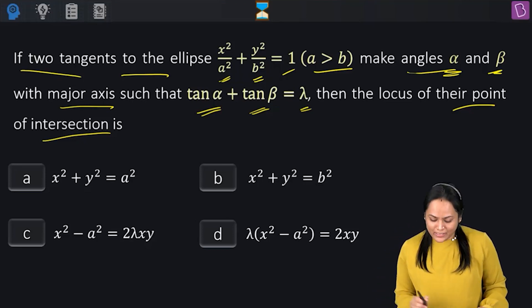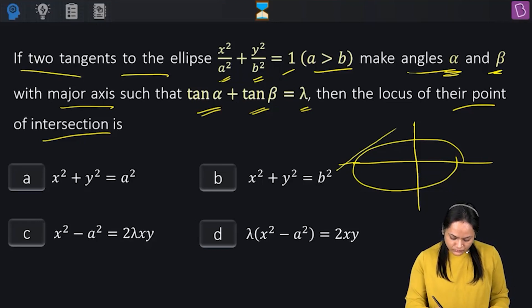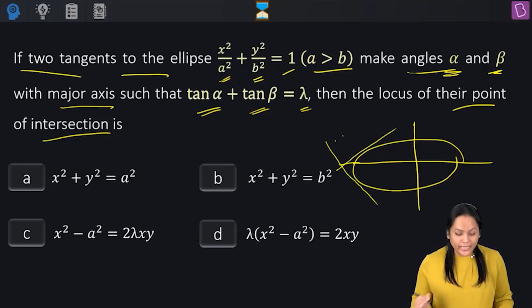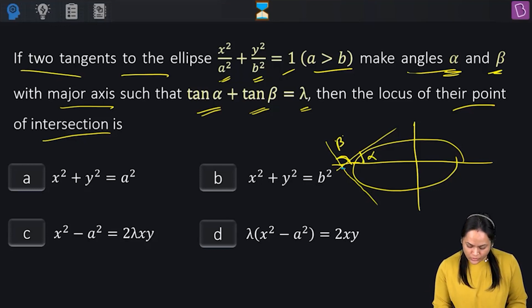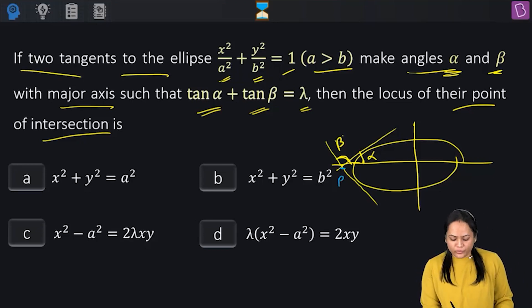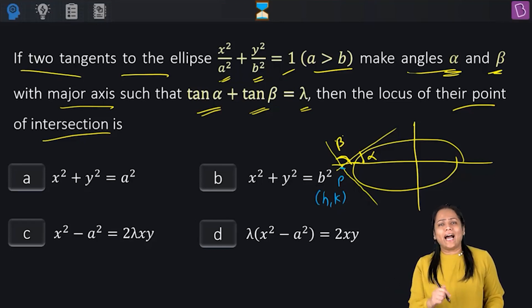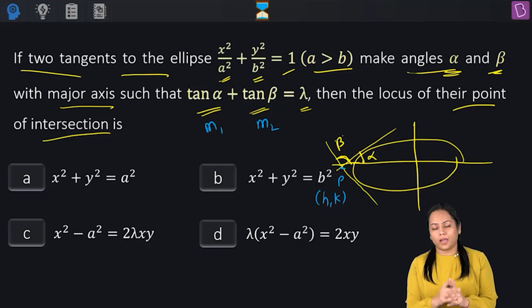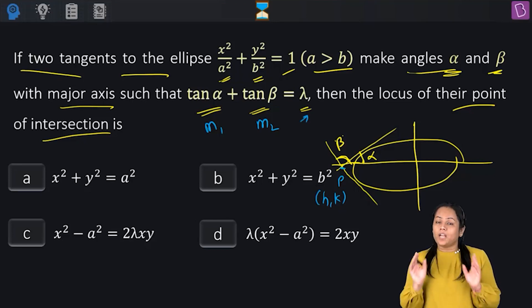Let's plot the figure. We have two tangents to the ellipse inclined at angles α and β, intersecting at point P(h, k). Since we know the sum of slopes m1 + m2 = tan α + tan β = λ, we use the slope form of the tangent: y = mx ± √(a²m² + b²).